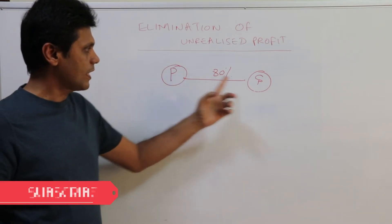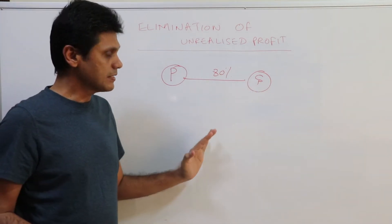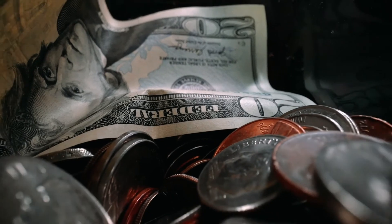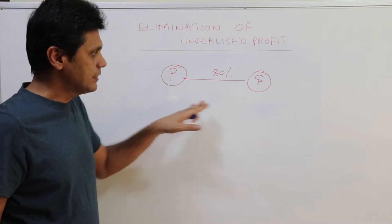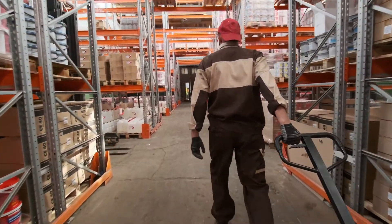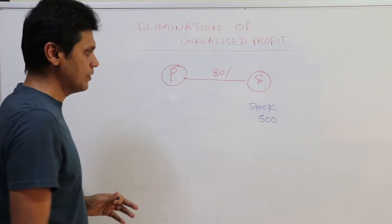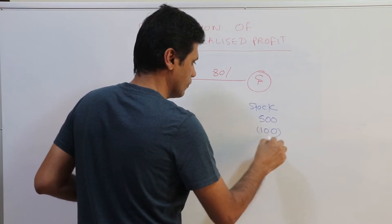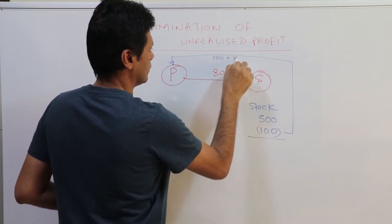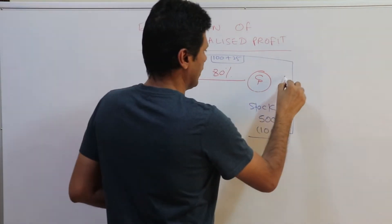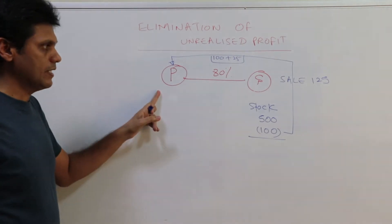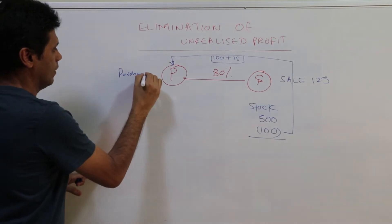P company has acquired 80% of the shares of S company. In this example, S company is going to make a sale to parent company P. S company had a stock worth of $500, of which they are going to sell $100 worth of goods to P company with a profit margin of 25%. So as far as S is concerned, they made a sale of $125, and as far as P company is concerned, they made a purchase of $125.